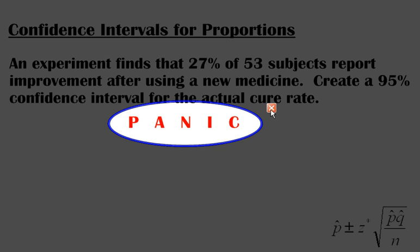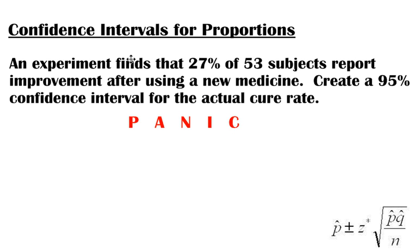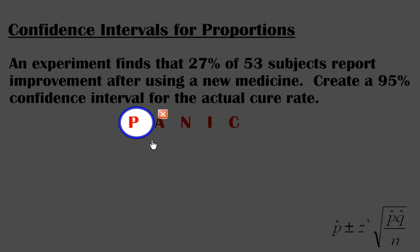To help remember what you should do to create a confidence interval for proportions. Really for any confidence interval you can use this acronym PANIC. P stands for parameter statements. So we're going to state what we're trying to do right at the beginning because we are using a sample to predict or to estimate a parameter. So that's why we're going to tell everybody what we're going to try and estimate in our parameter statement.